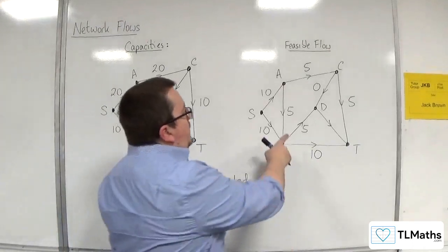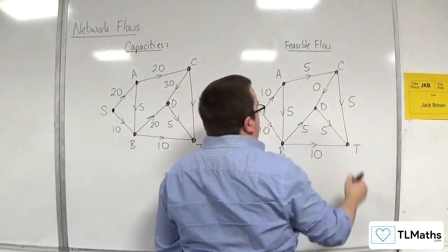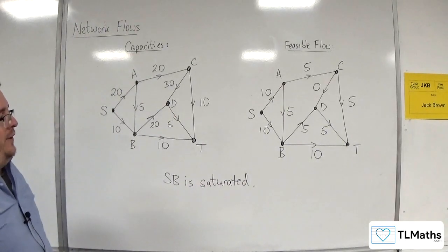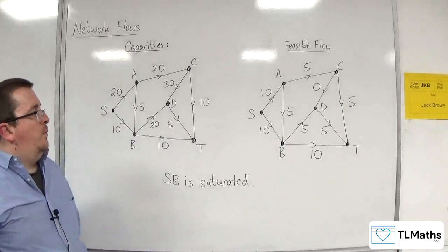So if 5 and 0 are coming into D, then 5 is going to be coming out. So this represents a feasible flow through the network.